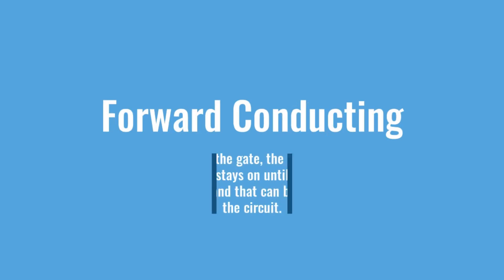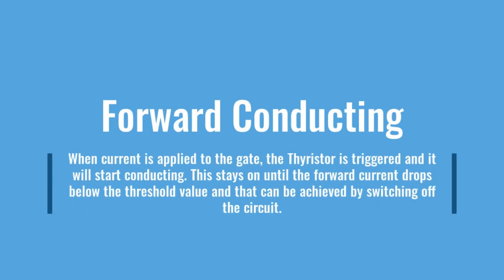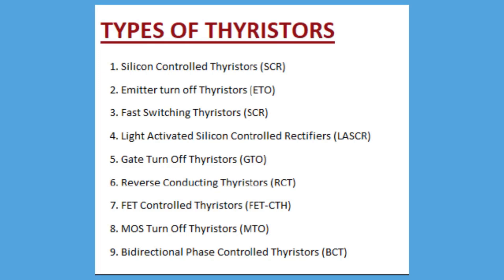In forward conducting mode, when current is applied to the gate, the thyristor is triggered and starts conducting. It stays on until the forward current drops below the threshold value, which can be achieved by switching off the circuit. Thyristors are classified into types based on their turning on and off capabilities and physical structure.